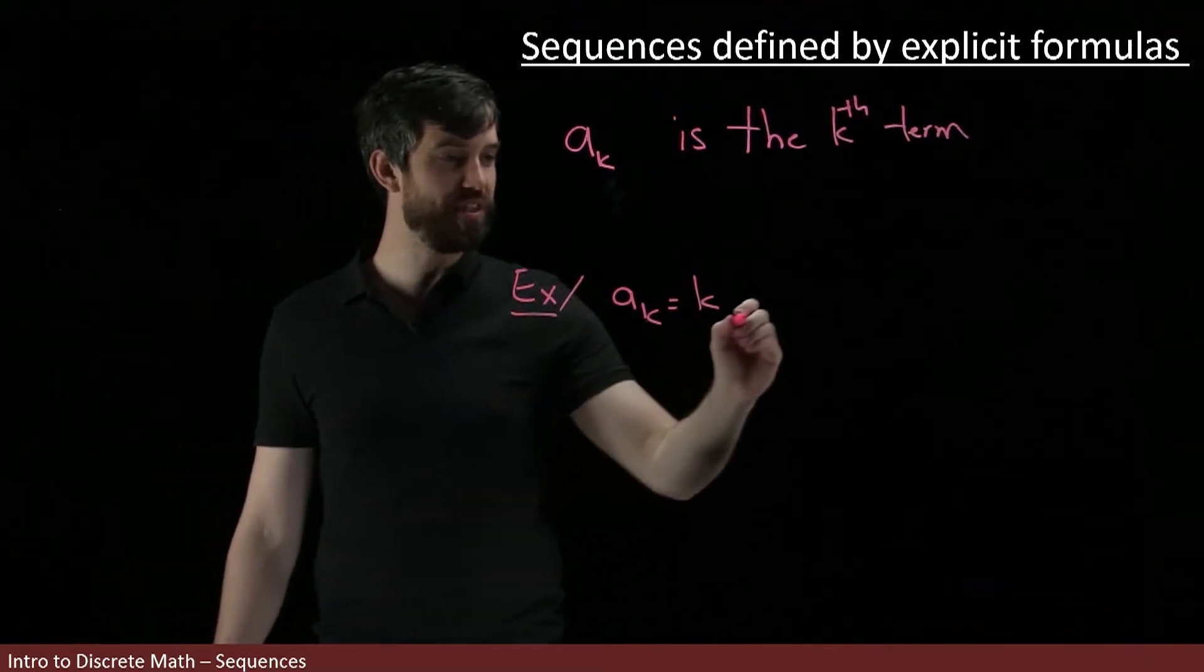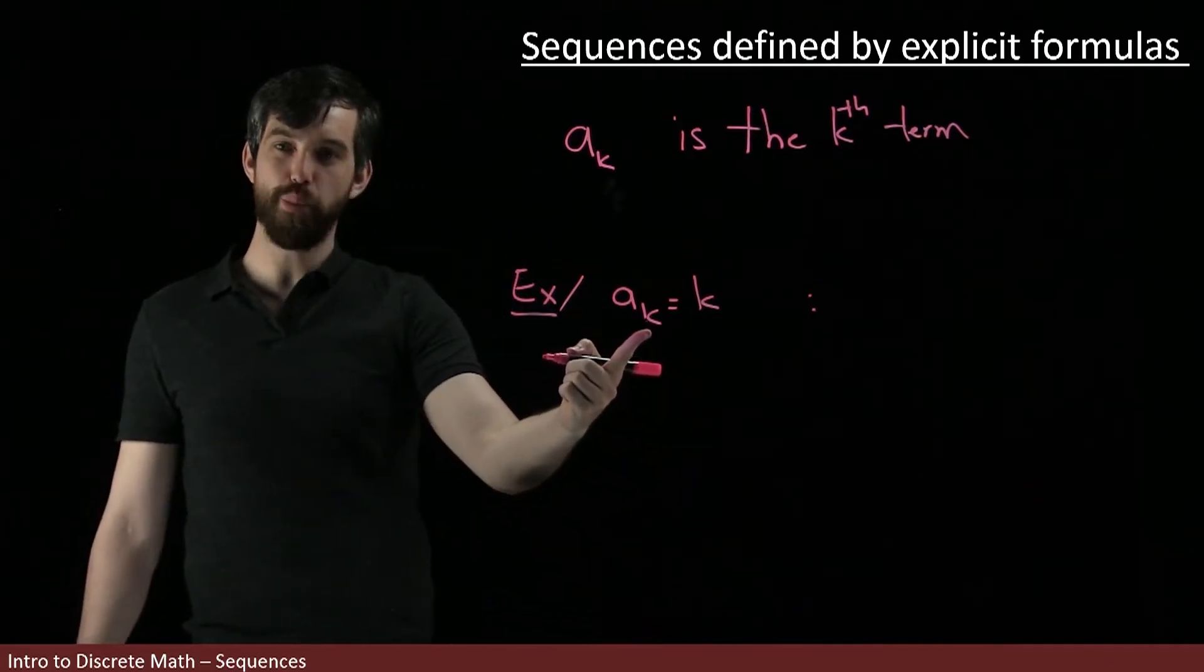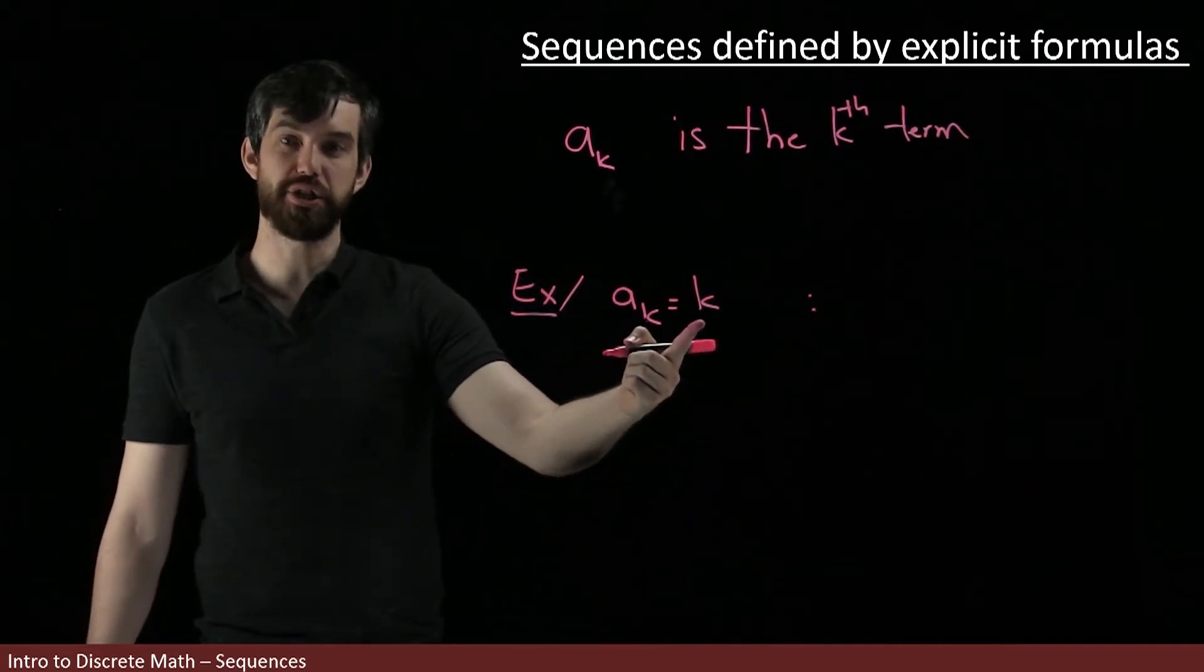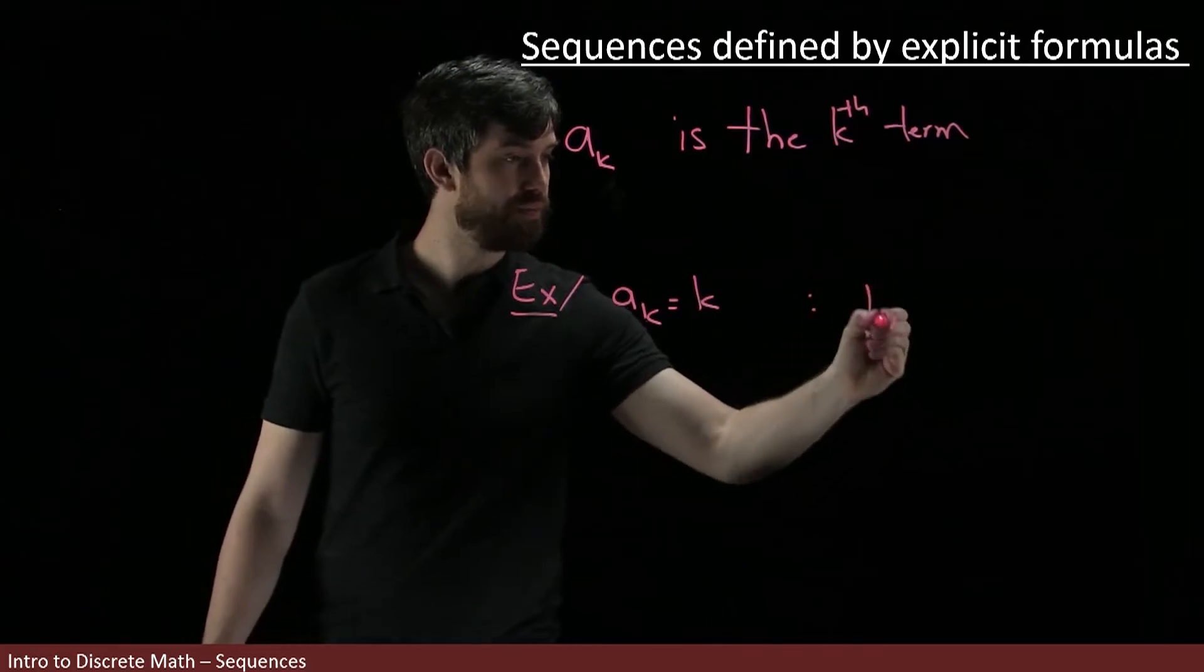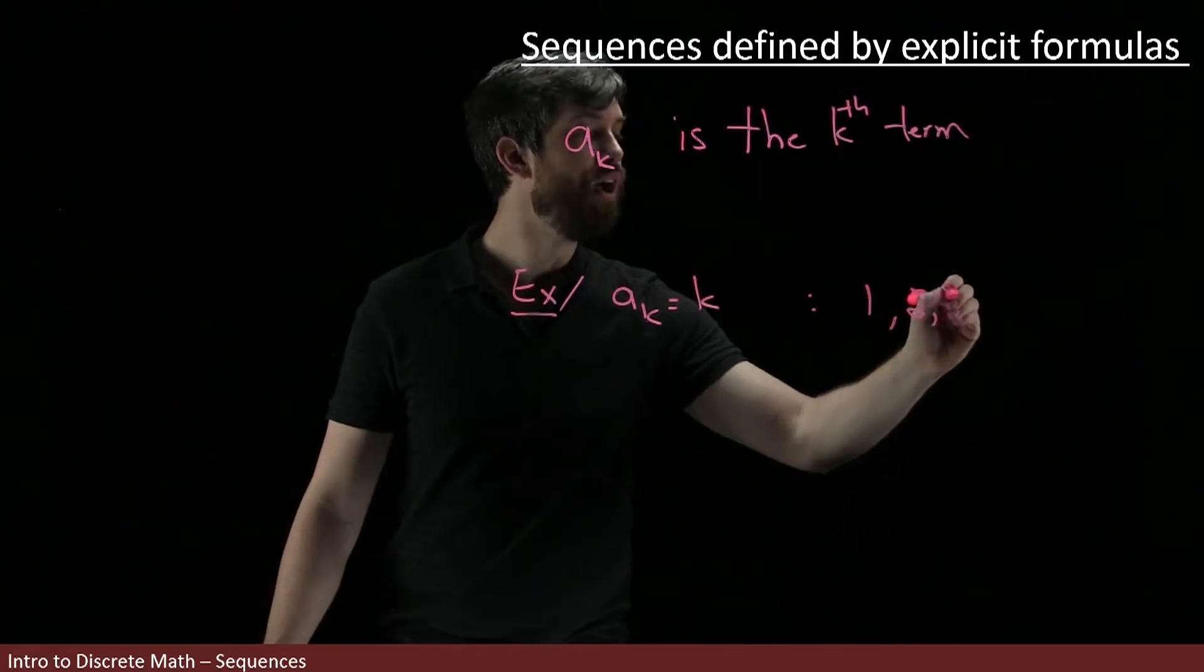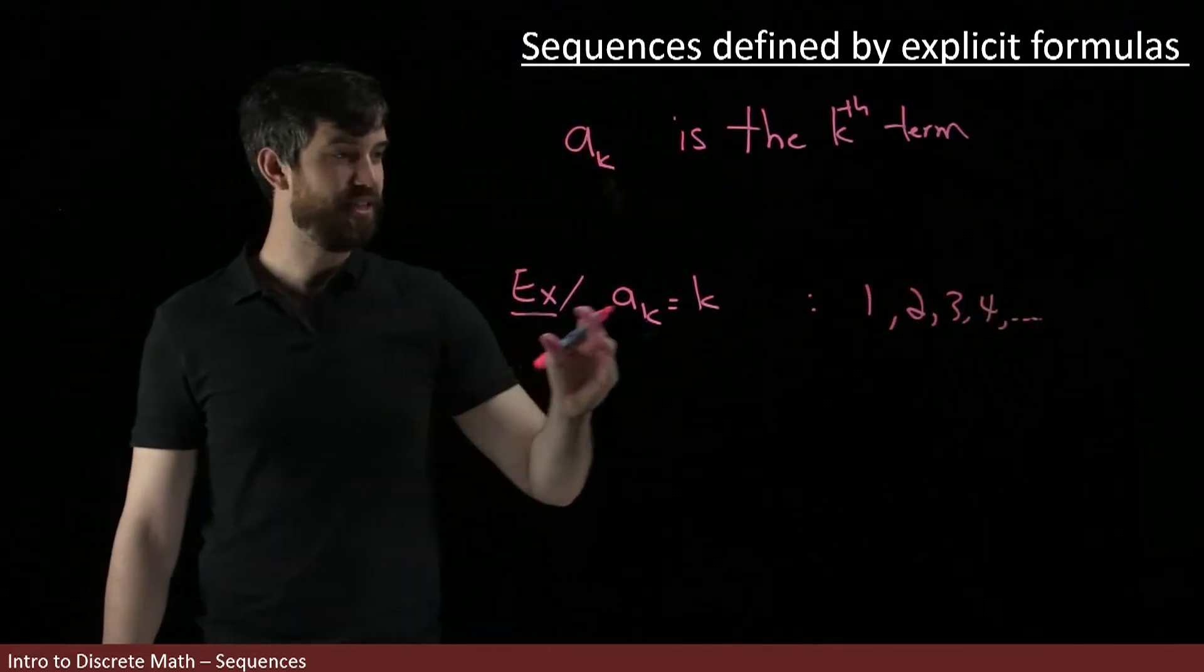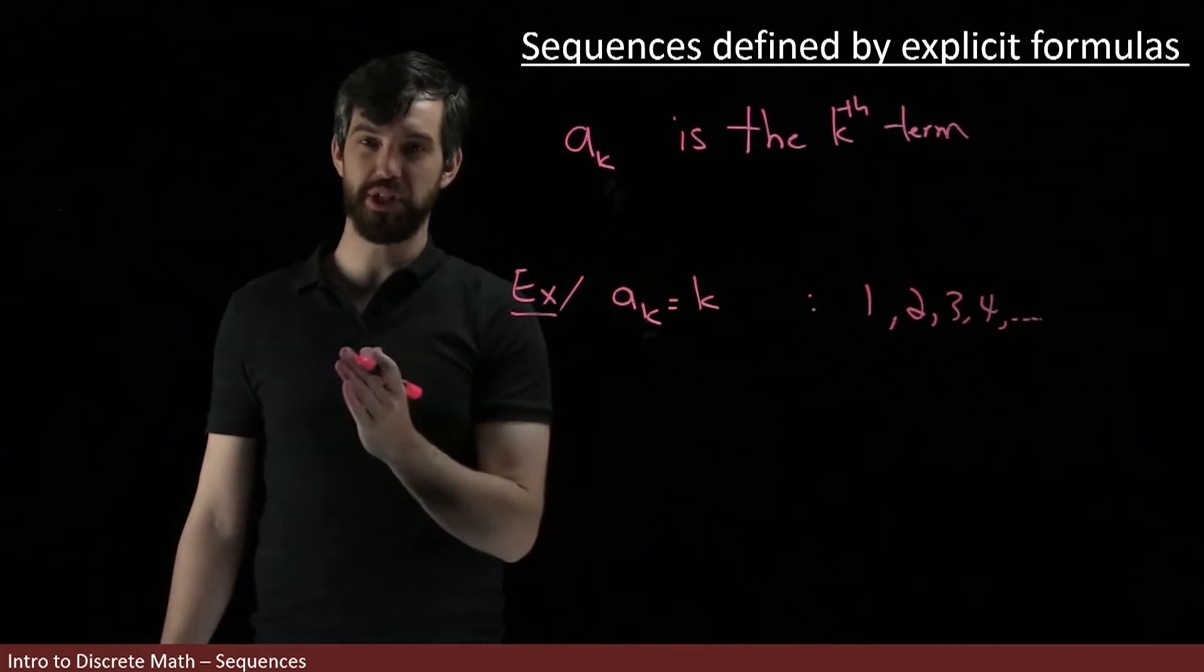So if I want to think about what this means for my sequence then, what I'm saying is that a sub one, the first term, is just one. And then a sub two, which is my second term, is just two. So one, two, three, four, and continues on. This is indeed just precisely the sequence that we saw before.